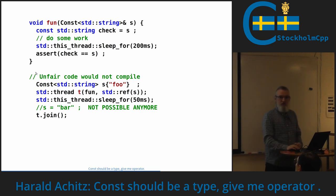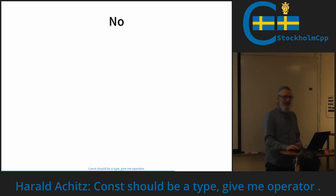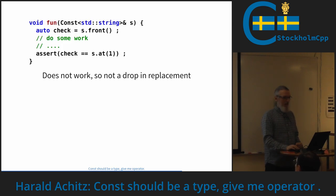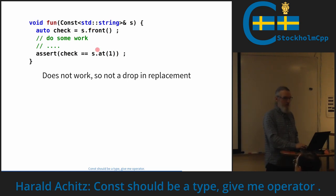So with this we have a fair const, and const is a type, and there is also no discussion if it's east or west const — so this is nice. But is this now everything fine? No. And it is not a drop-in replacement. I cannot write like this — this doesn't work, that I have `.front()` — even if I wrap a string.